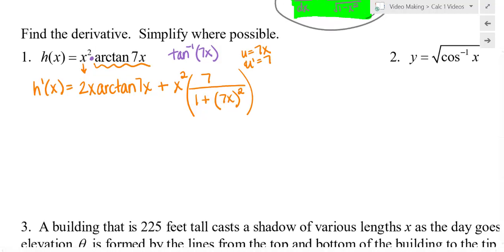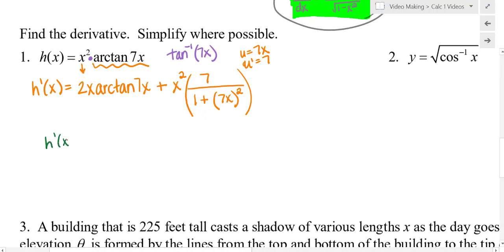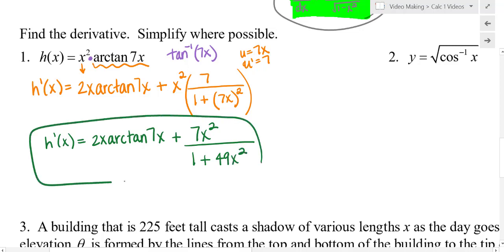Okay, so I have u prime which is 7 over 1 plus that argument or 7x quantity squared. So then my h prime in maybe what would be the most simplified form, I'm not going to worry about common denominators or anything like that. I'll just write it a little bit better here. So it would just be 7x squared over 1 plus I'm going to write that as 49x squared. You certainly could write it as the quantity 7x squared still if you wish.